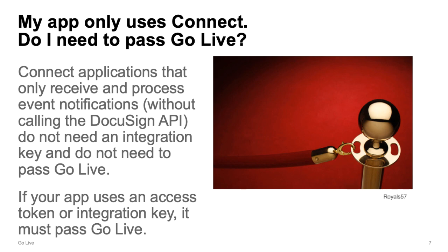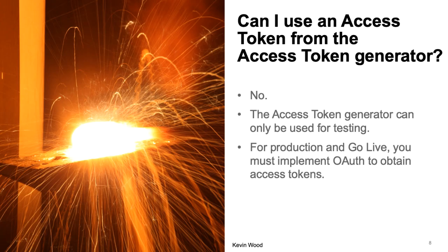Applications that use the DocuSign Connect webhook feature may or may not need to pass GoLive. If the application only uses Connect notification messages, then no integration key is needed and GoLive is not needed either. Many Connect applications use the webhook notification message to trigger one or more calls to a DocuSign API. In this case, you'll need an integration key to call the API, so your application must pass the GoLive process as well.